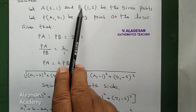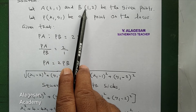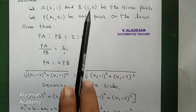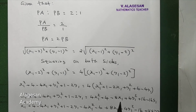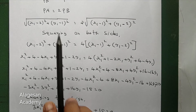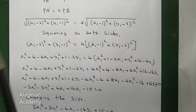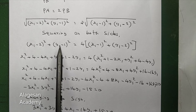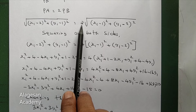PA is the distance: root of (x1-2)² + (y1-1)², and PB is the distance: root of (x1-1)² + (y1-2)². Now squaring both sides, the roots cancel, giving: (x1-2)² + (y1-1)² equals 4 times [(x1-1)² + (y1-2)²].